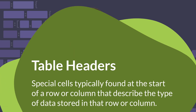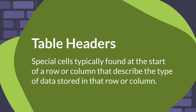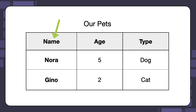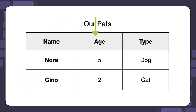Now let's talk about row and column headers. Headers are special cells, typically found at the start of a row or column, that describe the type of data stored in that row or column. You can define a row or column header with the table header element. For example, here we have a table with two pets. Every row has a row header — the name of the pet — and every column has a column header, which describes what the data in the column represents.